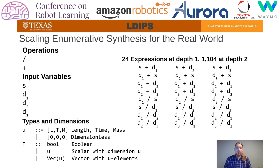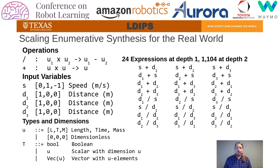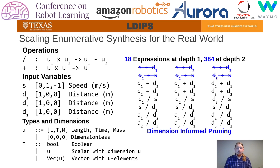To improve this scaling, we extend both the operations and variables with dimensionality, where a dimension is an extension of a type with dimension values corresponding to length, time, and mass. Values can be added only if they have the same dimension, otherwise their addition has no meaning. Values with different dimensions can be divided, and the result has a new dimension. Even in this simple example, these rules allow us to quickly prune out 6 erroneous additions resulting from adding speeds to distances. This impact becomes more significant at depth 2, where we shrink from 1,104 to 384 expressions.